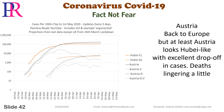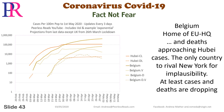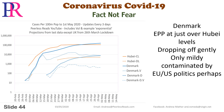Austria — back to Europe — at least looks Hubei-like, with excellent drop-off in cases. Deaths lingering a little. Belgium: home of EU HQ, and deaths approaching Hubei cases. The only country to rival New York for implausibility. At least cases and deaths are dropping. Denmark: EPP at just over Hubei levels, dropping off generally — only mildly contaminated by EU-US politics perhaps.